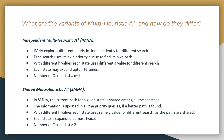There are two variants of multi-heuristic A star: independent multi-heuristic A star denoted by IMHA and shared multi-heuristic A star denoted by SMHA. IMHA explores different heuristics independently by simultaneously running N+1 searches — one for the consistent heuristic and N searches for inadmissible heuristics — where each search has its own priority queue. Therefore, in addition to different H values, each state uses a different G value for each search. The total number of closed lists in IMHA star are N+1 for N+1 searches.